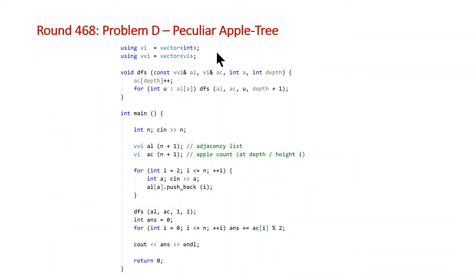So at the top here we have two type aliases that I'm just using so that I don't need to type out vector vector int twice, once in the DFS function declaration and then once here. So VI is just vector of integers and VVI is a vector of vector of integers.